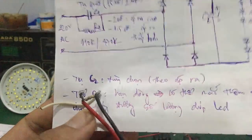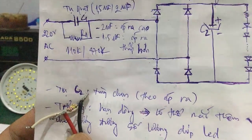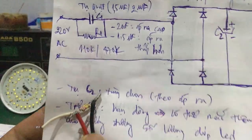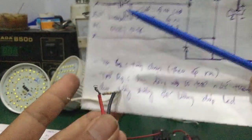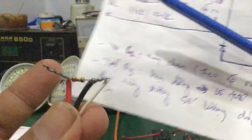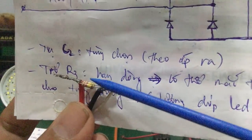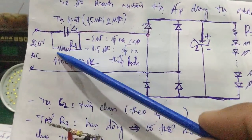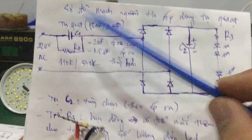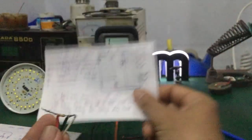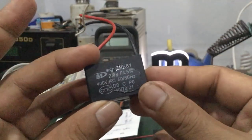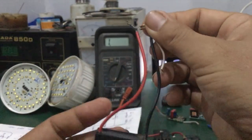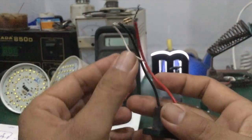Mình lấy một cái con điện trở khoảng 110K. Ở đây mình không có con 110K, mình lấy 2 con điện trở 220K mắc song song, thì ra giá trị khoảng 110K. Mình mắc song song 2 con này lại. Đây là tụ 2mF, rồi mắc song song con điện trở 110K.